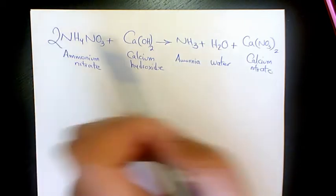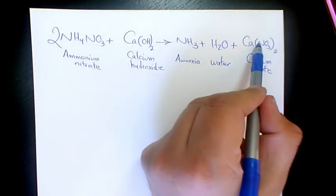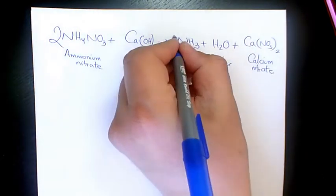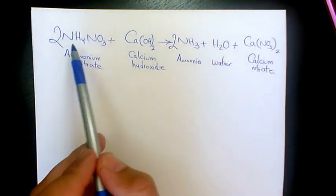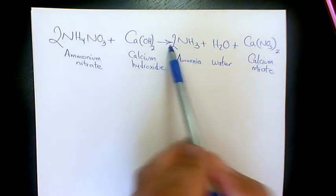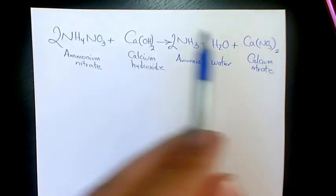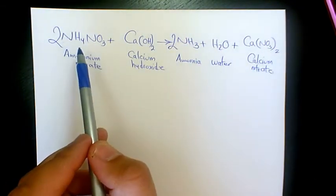So it's better to put 2 here. Now calcium and nitrogen are balanced because nitrogen we have 4 and 4 here as well.